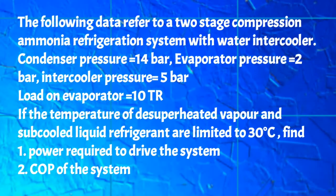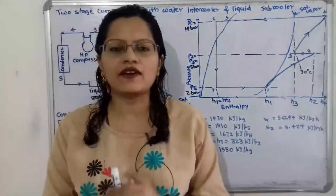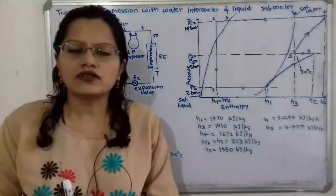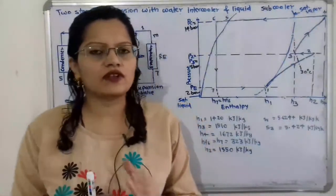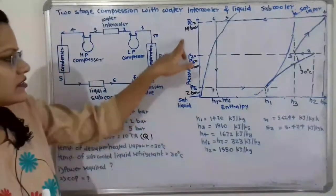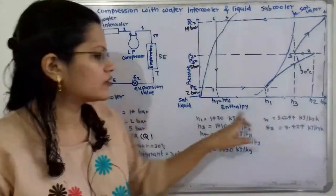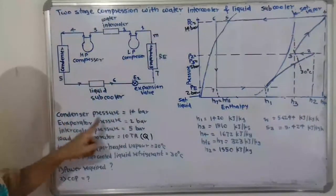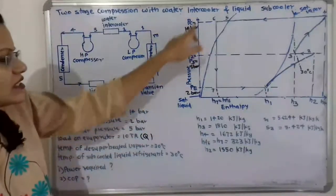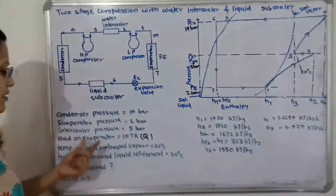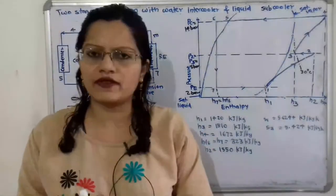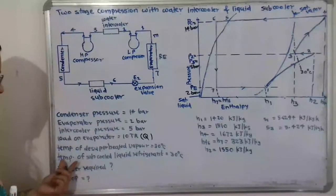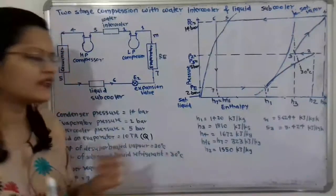We have to find the power required to drive the system and the coefficient of performance. In the exam, the pressure-enthalpy chart for ammonia refrigerant is provided — on the vertical axis is pressure and on the horizontal axis is enthalpy. We select three pressure lines: condenser pressure 14 bar, evaporator pressure 2 bar, and intercooler pressure 5 bar. The load on the evaporator is 10 tons of refrigeration, denoted Q. The temperature of desuperheated vapor and subcooled liquid refrigerant is 30 degree Celsius.